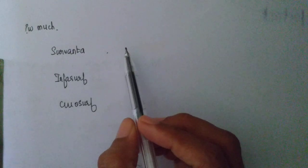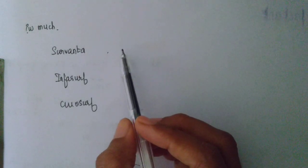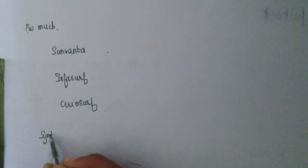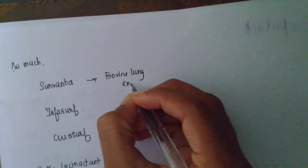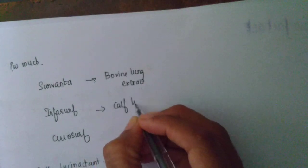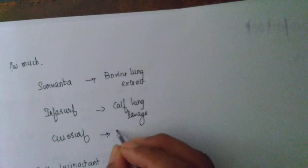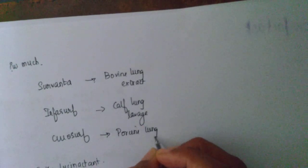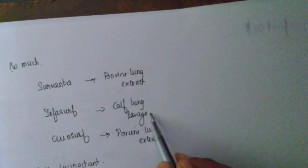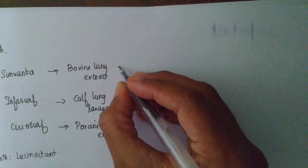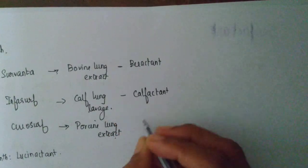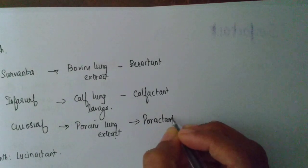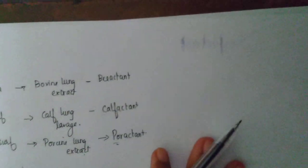There are three types, these are all naturally derived. One more there is a synthetic surfactant which is called as lucinactant, this is not produced anymore because naturally occurring surfactants are definitely better. Survanta is from bovine lung extract. Infrasurf is calf lung lavage fluid. Curosurf is porcine pig lung extract. So these two are extracts this is a lavage. So survanta is beractant, infrasurf is calfactant, porcine is poractant.